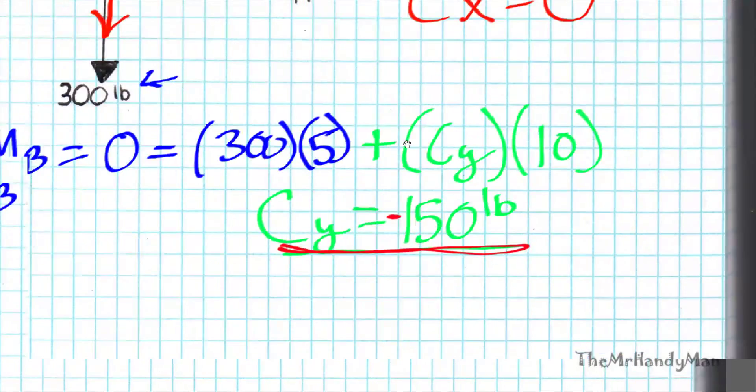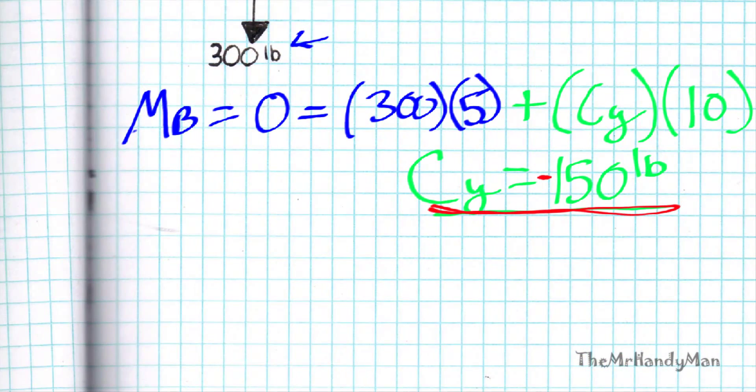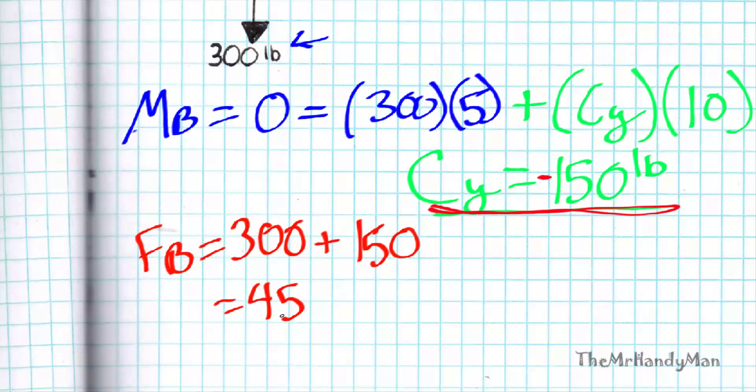And that's just summation of forces. Forces all must equal zero. So basically, force B equals 300 plus 150, which equals 450 pounds.